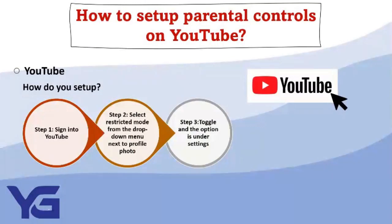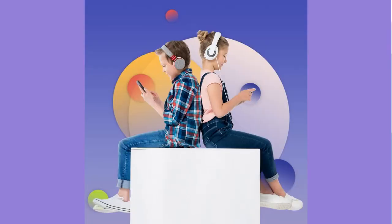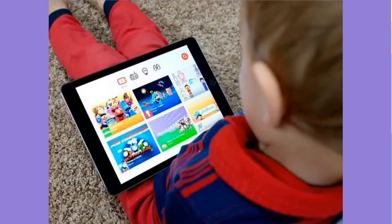Step 1: Sign in to YouTube. Step 2: Select Restricted Mode from the drop-down menu next to your profile photo in the upper-right corner of the screen. Step 3: Restricted Mode will then appear in a drop-down menu. Toggle the Restricted Mode button in your iOS profile settings — the option is under Settings, General for Android users. YouTube Kids is now accessible on both Apple's iOS and Google's Android operating systems. It is screened for children and has parental controls activated. Music, education, and other areas are the emphasis of YouTube Kids programming.